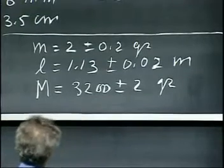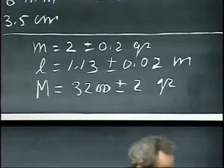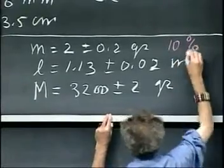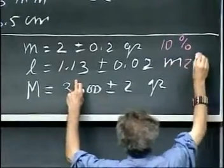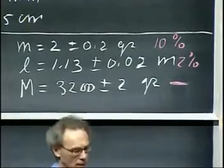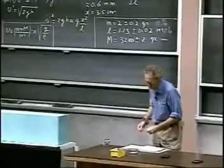So we have a 10% uncertainty in the mass. We have a 2% uncertainty in the length. And we have a negligible uncertainty in the mass of the block. That's negligibly small.